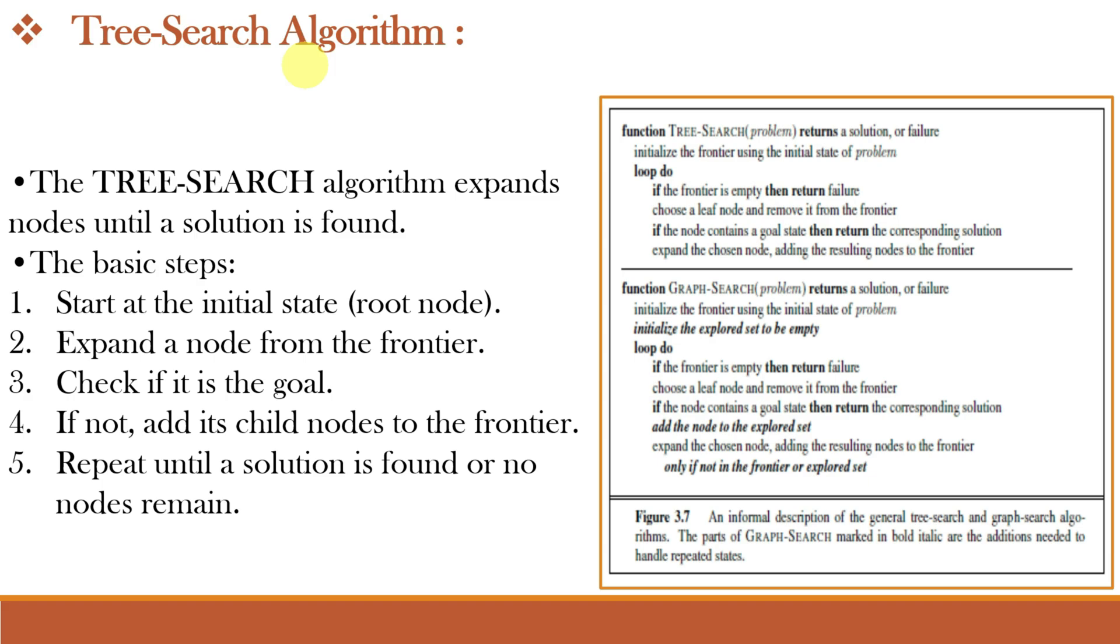The tree search algorithm systematically explores nodes to find a solution. It maintains a frontier of possible expansions. If the goal is found, we return the solution. Otherwise, we continue expanding until the solution is found.